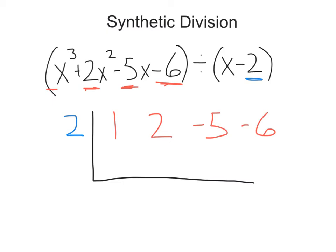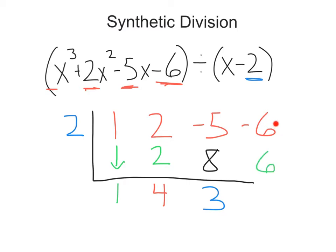From here, we're going to follow the seemingly magic process, and you just do this over and over again. We bring down the one, then multiply two times one — that gives us two. Then we add: two plus two is four. Then two times four gives me eight. Then negative five plus eight gives us three. Then two times three is six, and negative six plus six gives us zero.